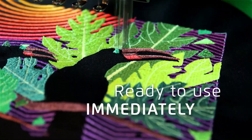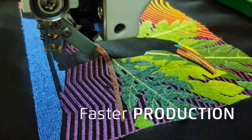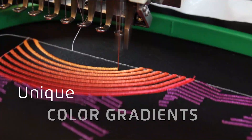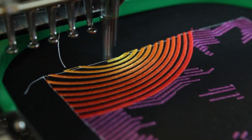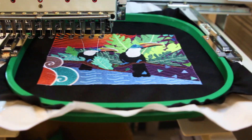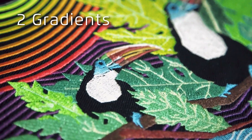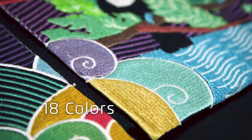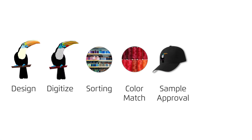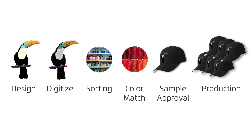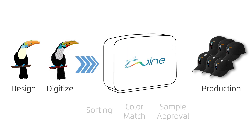Increase your productivity by removing the traditional constraints on colors and add more variety to your designs, including unique color gradients, all in a single thread. By reading your digitized embroidery file, the Twine system captures your colors accurately and the exact lengths of thread needed, removing the need for large stocks of colored thread as well as the conventional process of color matching and sample approvals.